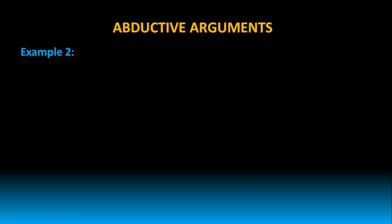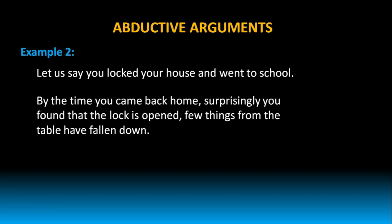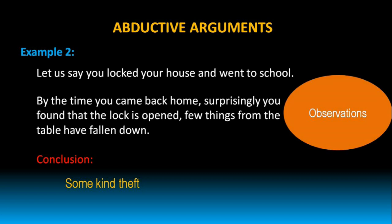Let's take one more example. Let's say you locked your house and went to school. By the time you came back home, surprisingly you found that the lock is opened and a few things from the table have fallen down. So what can you conclude with this available information? You may say that some kind of theft has happened. But how did you arrive at this conclusion? You have just taken into account the available observations and then gave the best prediction.